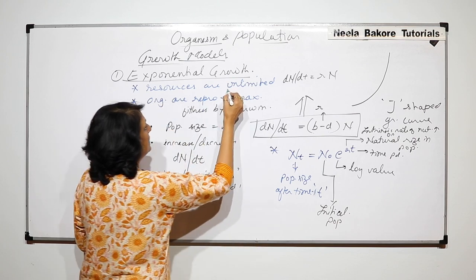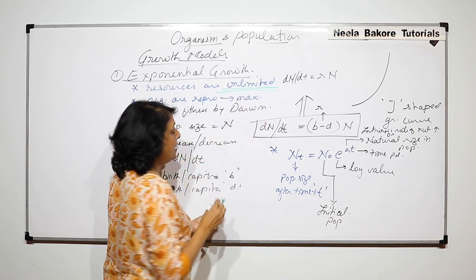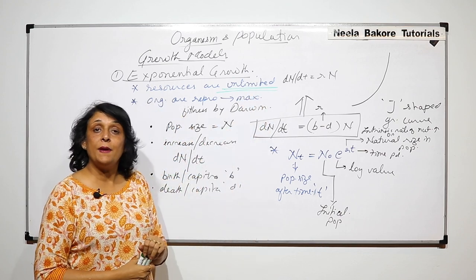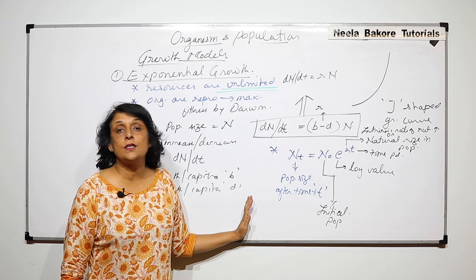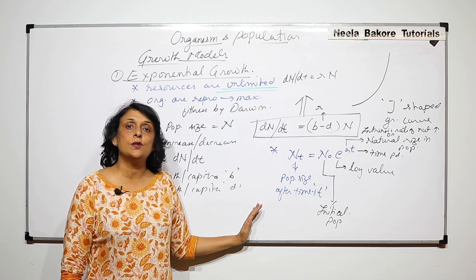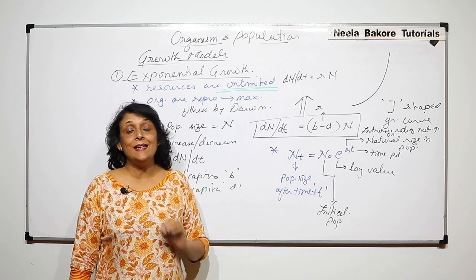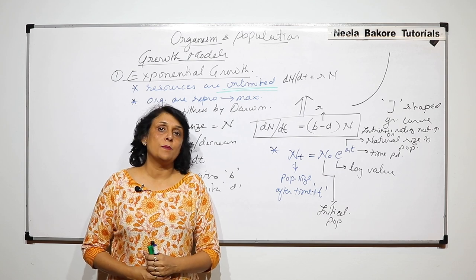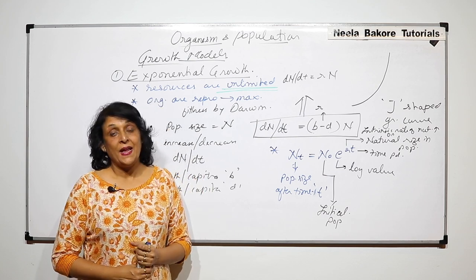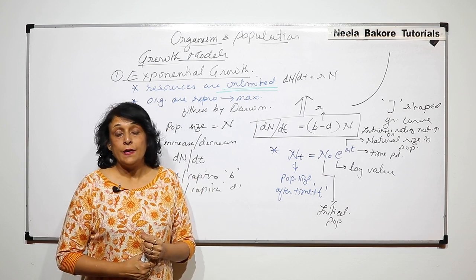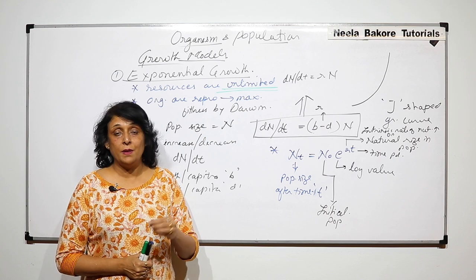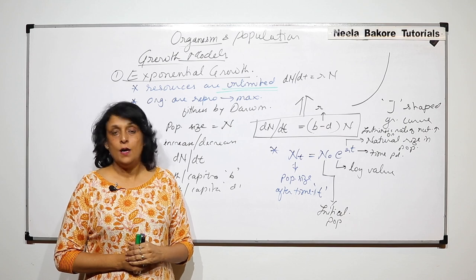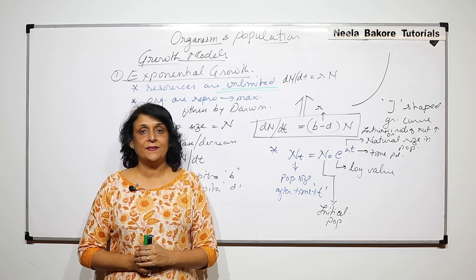Such growth is known as exponential growth. The key condition to remember is that resources are unlimited. As mentioned at the beginning, these conditions are seen only in laboratory settings. In nature, some resource always becomes a limiting factor, and when that happens, we see another type of growth model, which we will discuss in the next part.